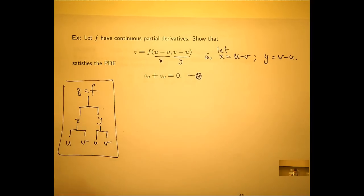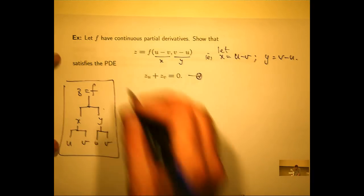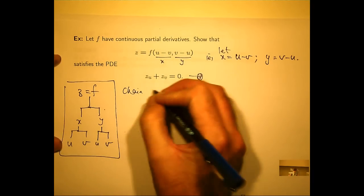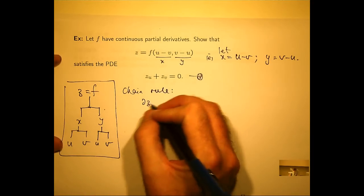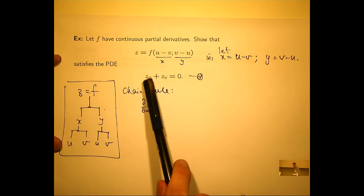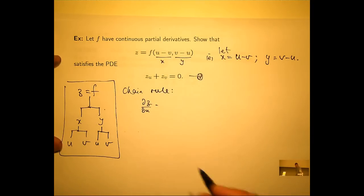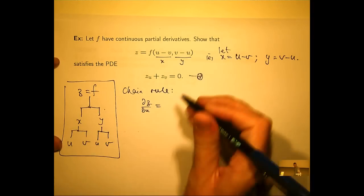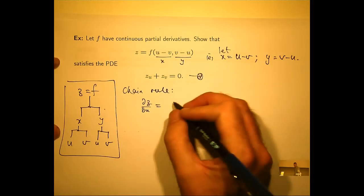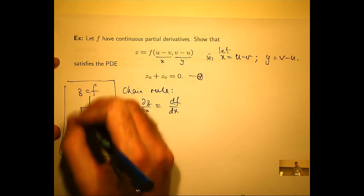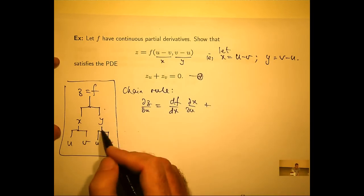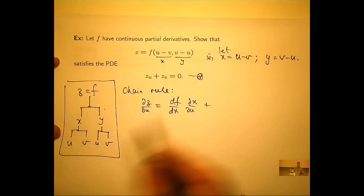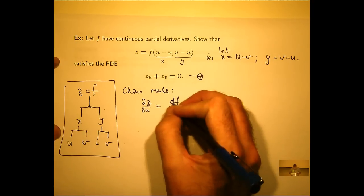A little diagram there. Let's calculate the partial derivatives by using the chain rule. So dz/du: let's find all the paths to a u. It's going to be ∂f/∂x · ∂x/∂u plus the other path, ∂f/∂y · ∂y/∂u. They should be partial derivatives.